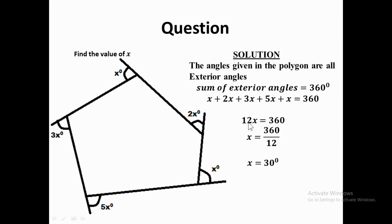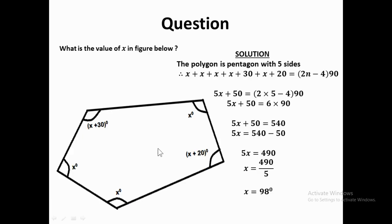Adding all the exterior angles together: x plus 2x plus 3x plus 5x plus 6x equals 360 degrees. Collecting like terms gives 12x equals 360 degrees. Dividing both sides by 12 gives x equals 30 degrees.